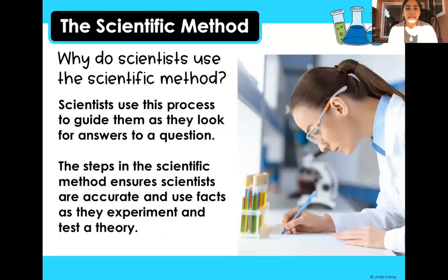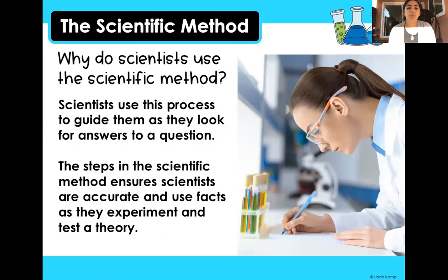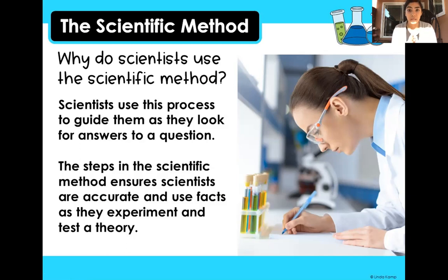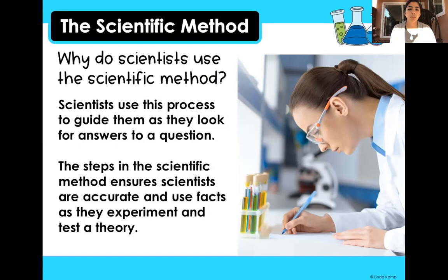So why do scientists use the scientific method? Why even use it? Well, scientists use this process — this way of doing things — to help them look for the answer to their question. We've been talking about this scientific method, and now I'm going to talk about the steps. How do we do this method? What are the steps?